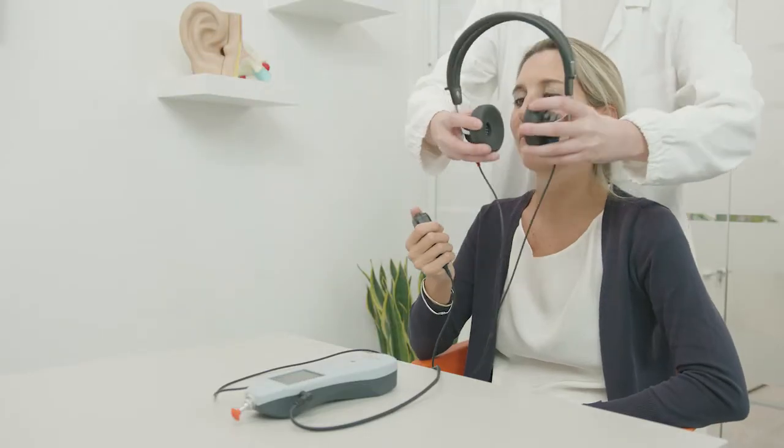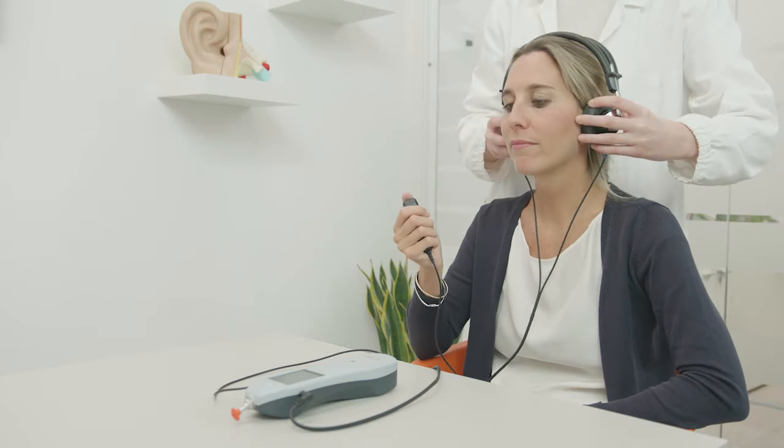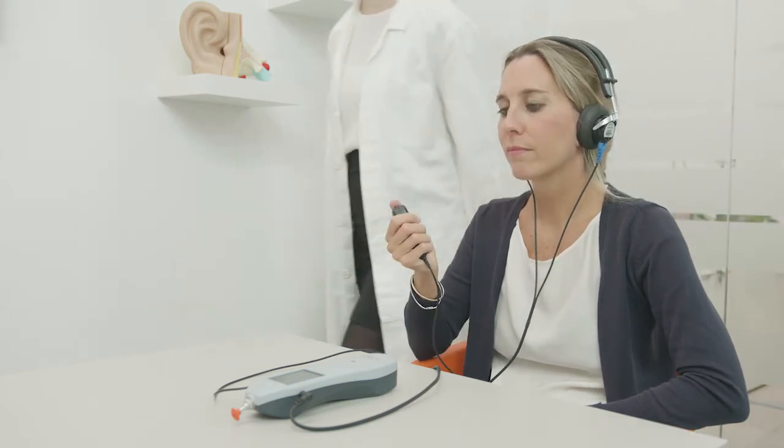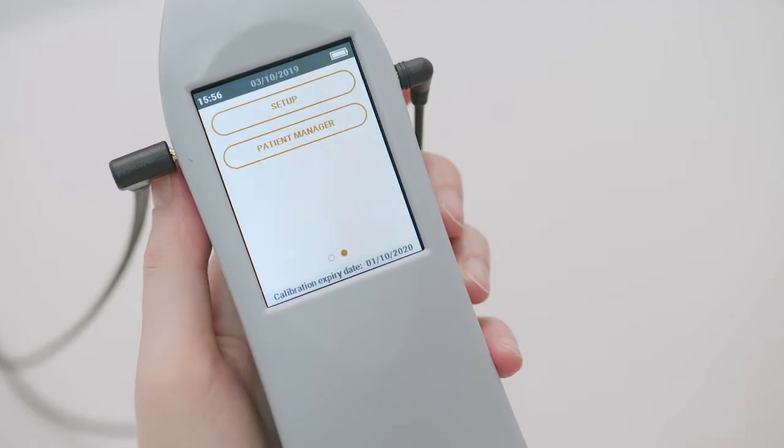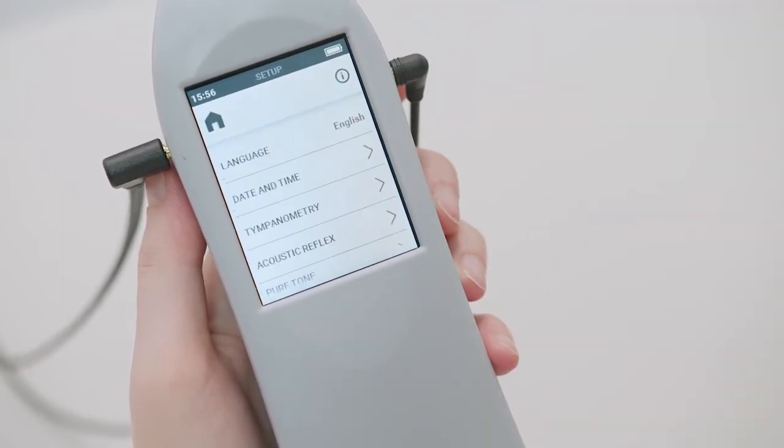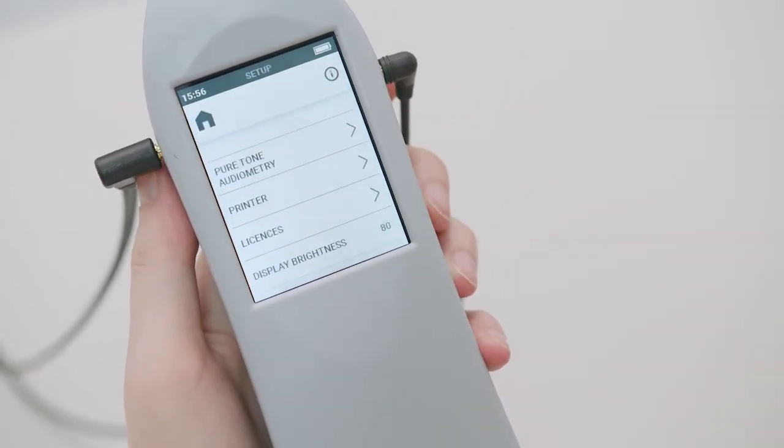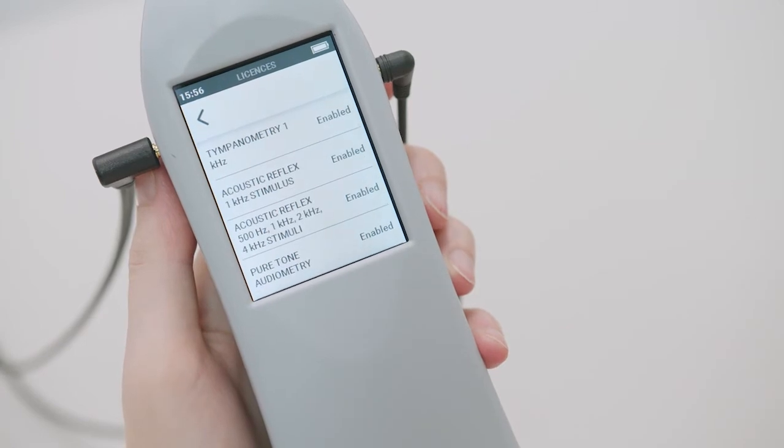In this section we will talk about the optional audiometric features available upon request with the timpani. An audiometric examination may be carried out after the activation of the relevant license. Following this, the related tab will appear in the main menu.